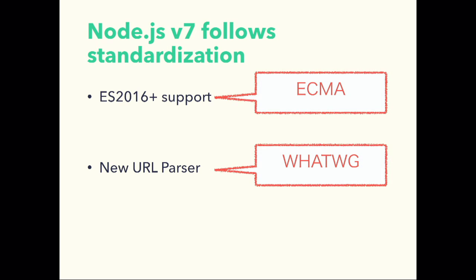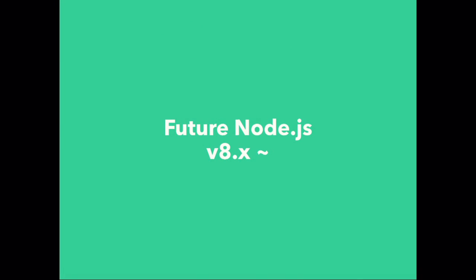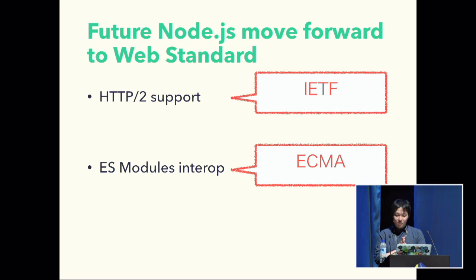Node.js v7 may not have flashy features like inspector mode, but these features follow the web standard. ES 2016 is based on ECMA-262, and the new URL parser is based on the WHATWG URL spec. These features bring Node.js toward the web standard. Next, I'd like to introduce the future Node.js — the next major version will be v8.x. The future Node.js also moves forward to the web standard, with two features: HTTP/2, based on IETF working groups, and ES modules, based on ECMA script working groups.